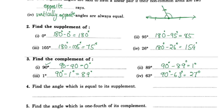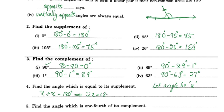Next question: find the angle which is equal to its supplement. The two angles are equal. Let the angle be x. Then x plus x equals 180 degrees. So 2x equals 180 degrees, which gives x equals 90 degrees. The angle equal to its supplement is 90 degrees.